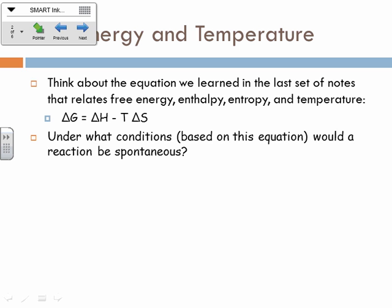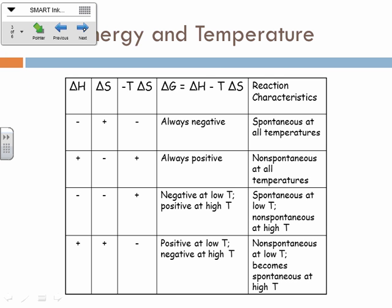When would a reaction not be spontaneous? Just looking at the equation — if ΔH is positive, in other words endothermic, absorbing heat, and if the change in entropy is negative, then for a reaction where it absorbs heat and the system becomes more ordered, that's never going to be a spontaneous reaction. That's never going to happen on its own. That's non-spontaneous at all temperatures — that's the second scenario.